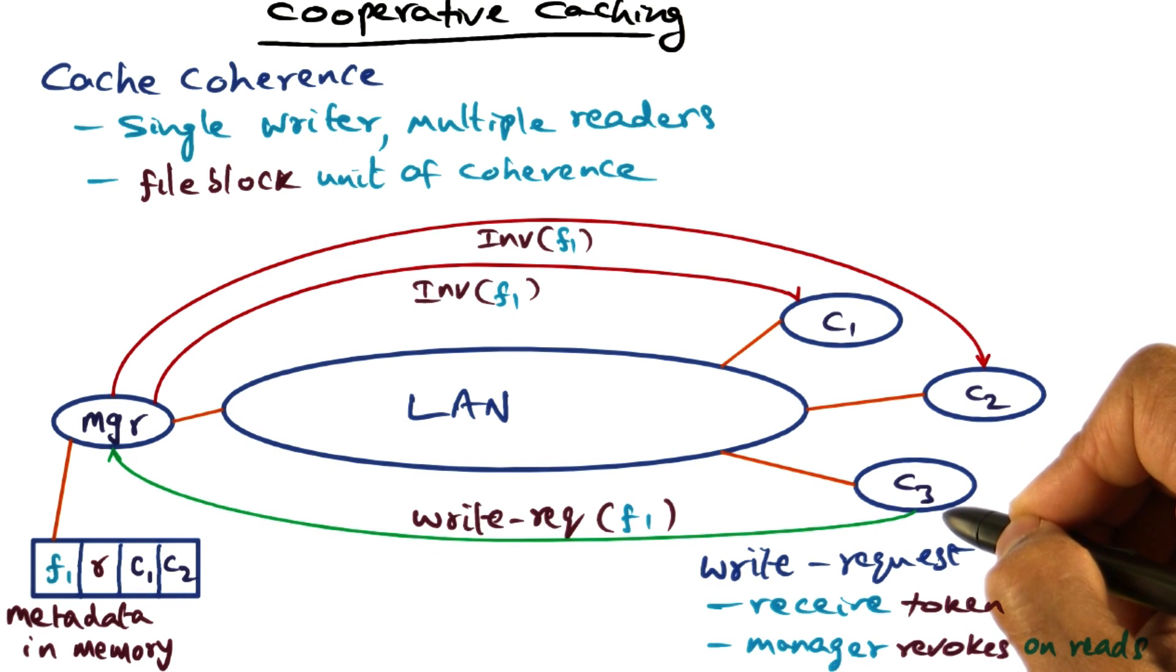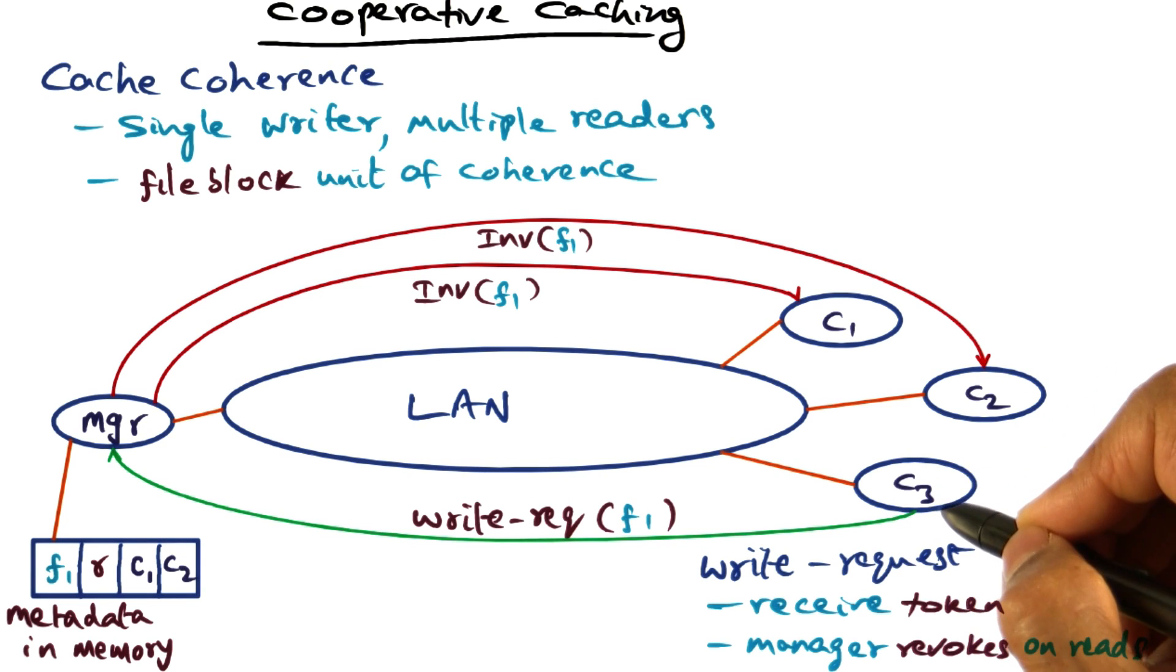A future read request comes. When it comes, that read request can be satisfied by getting the contents of the file from the cache of C3.